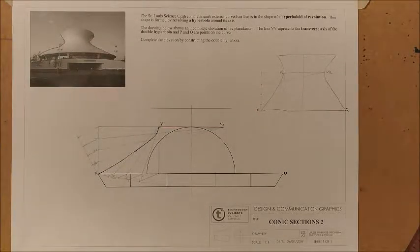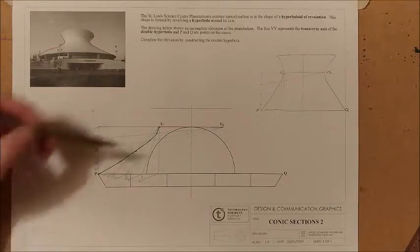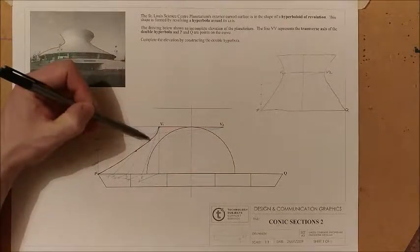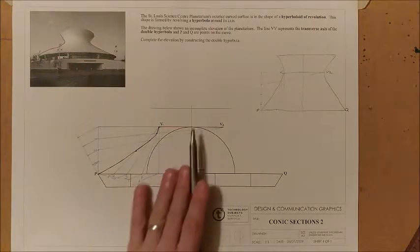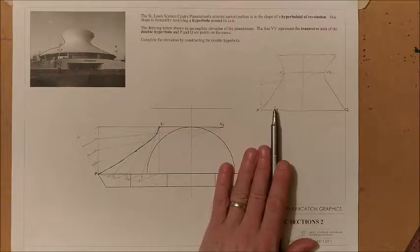Once you've that part of the question done, that's the hard part really. Now all you've got to do is convert those points, sorry transfer those to the other side of your axis, and mirror them across to your right-hand side here as well.